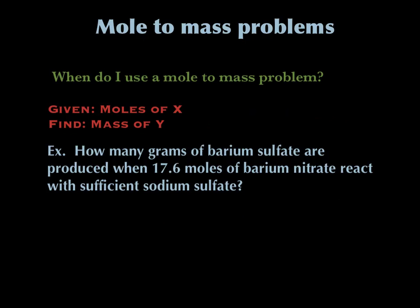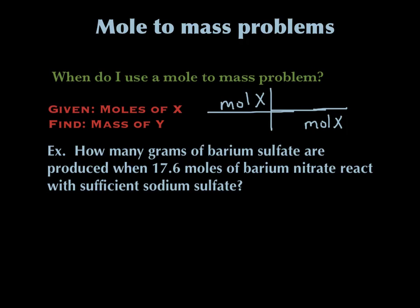So that brings us to when do we use mole to mass problems. You use them when you're given moles of a certain thing, like x, and you're asked to find the mass of another thing, like y. There's a general setup for this — you should write this down in your notes. If you're given moles of x, you're going to start out with what you're given on your action line: moles of x. Then you're going to copy down moles of x on the bottom of the next one.